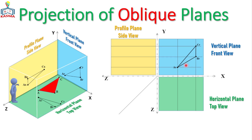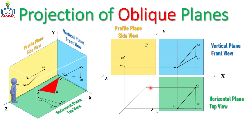For the top view, points AT, BT, and CT are placed accordingly, and once connected you get the projected triangle ABC on the horizontal plane. For the side view, AR, BR, and CR are placed, and finally the multi-view drawing layout shows all three foreshortened projections.